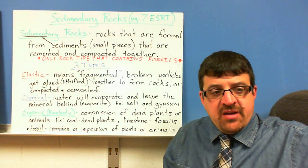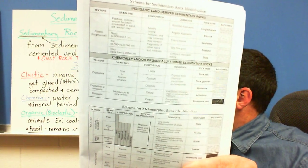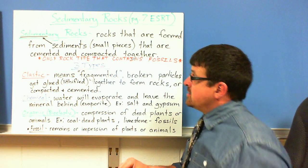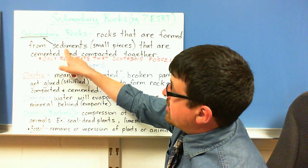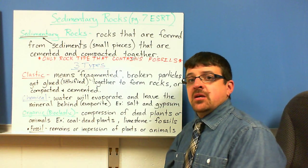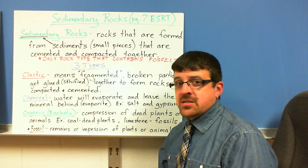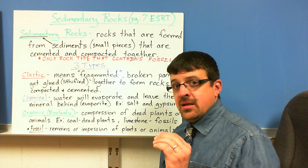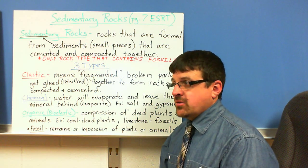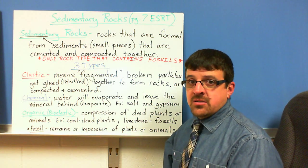Page seven of your reference tables at the very top is your scheme for sedimentary rock identification. Sedimentary rocks come from sediments — small pieces that are cemented and compacted together. They're the only rock type that can contain a fossil. If you have a fossil in the rock, it is a sedimentary rock. Any rock that we give you — if it has a fossil in it, you can guarantee it's a sedimentary rock.